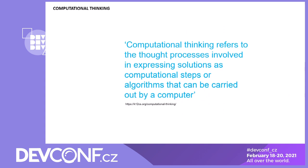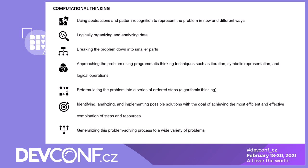One thinking pattern I mentioned is computational thinking — the thought process for expressing solutions as computational steps or algorithms that could be carried out by a computer. Very discrete steps. The key points include using abstractions and pattern recognition to represent the problem in different ways, logically organizing and analyzing data, breaking the problem down into smaller parts, and approaching the problem using programmatic thinking techniques such as iteration, symbol representation, and logical operations. Reformulating the problem into ordered steps is another critical step, and identifying, analyzing, and implementing solutions with the goal of making a more efficient combination based on recursion.